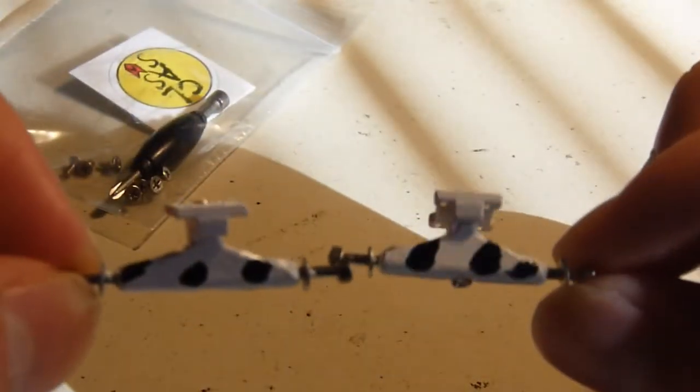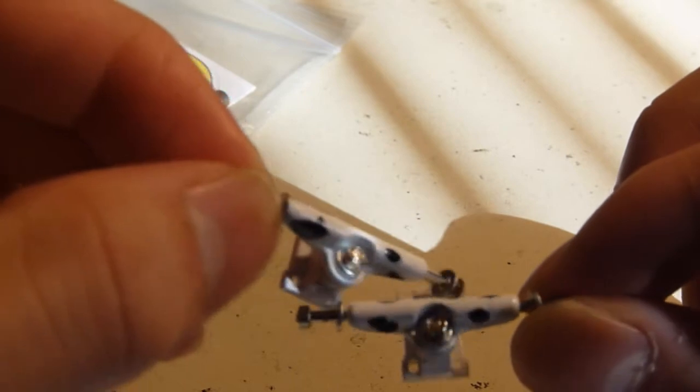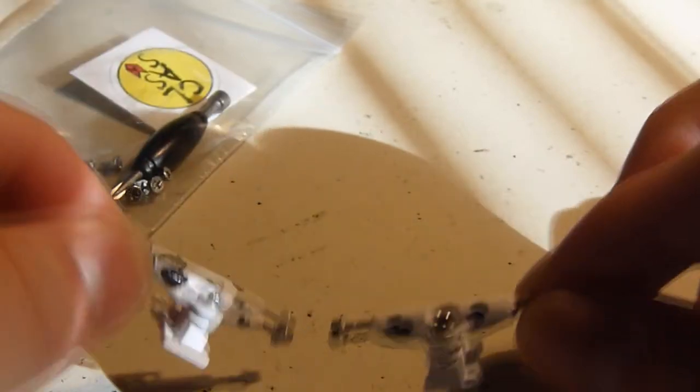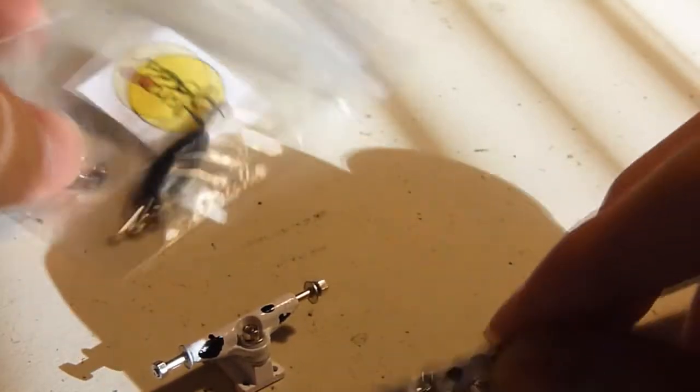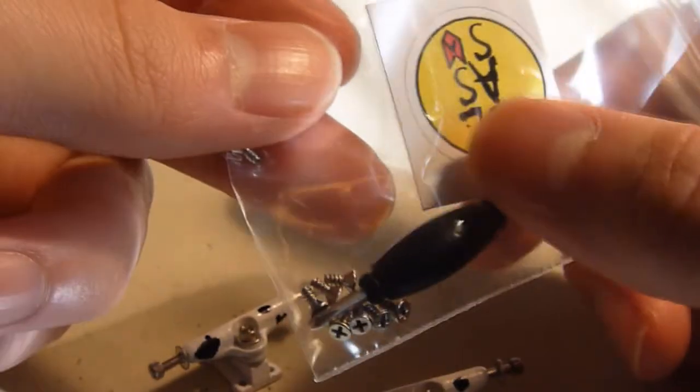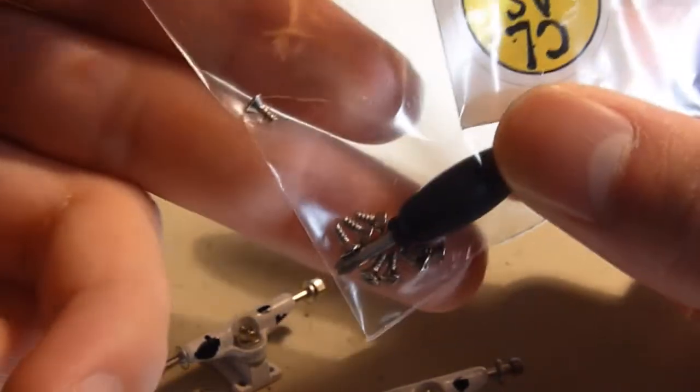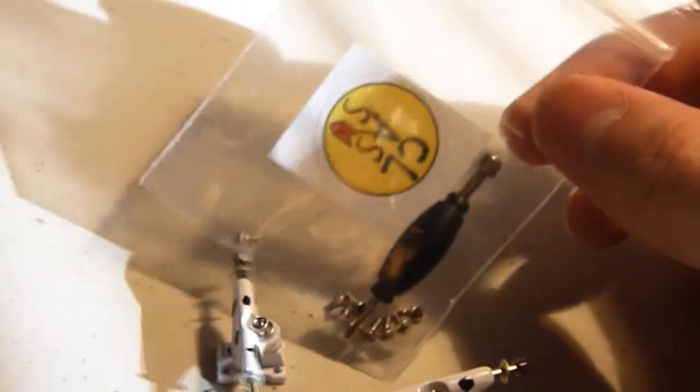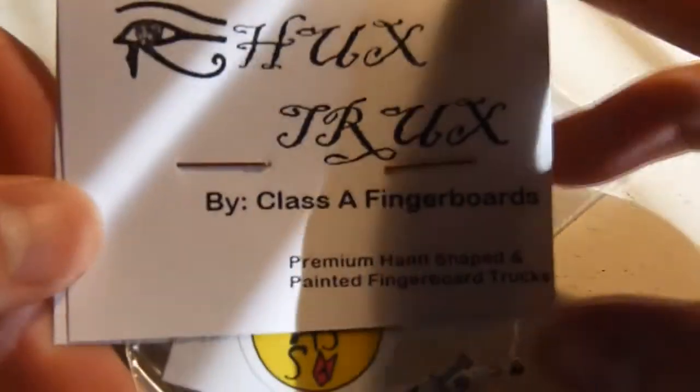Here's the other set. So each set comes with the two trucks of course, the bushing kit, the wheel washers, bolts, sticker, dual tool, and your silver bolts, silver hardware. And it comes in this kind of packaging like always, rex trucks.